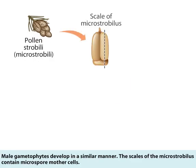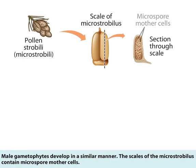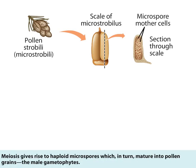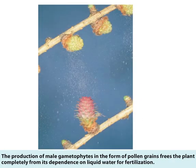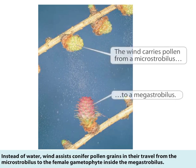Male gametophytes develop in a similar manner. The scales of the microstrobyli contain microspore mother cells. Meiosis gives rise to haploid microspores, which in turn mature into pollen grains, the male gametophytes. The production of male gametophytes in the form of pollen grains frees the plant completely from its dependence on liquid water for fertilization. Instead of water, wind assists conifer pollen grains in their travel from the microstrobyli to the female gametophyte inside the megastrobyli.